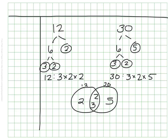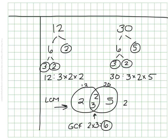With our Venn diagram in place, we can find the greatest common factor by looking in the middle: 2 times 3 is 6. That is their greatest common factor. I can also find their least common multiple by looking from left to right: 2 times 2 times 3 times 5. Their least common multiple is 60. This might be a faster way for many of us to find the least common multiple or the greatest common factor, especially when we're working with really large numbers or numbers we're not as familiar with.